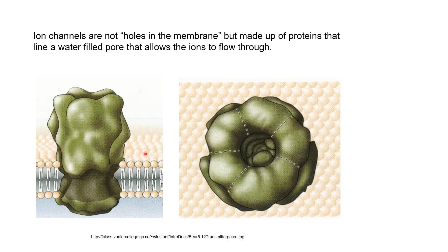These ion channels are not formed by creating holes in the bilipid layers of the membranes. Rather, ion channels are formed by protein molecules that are embedded in the membrane, spanning the whole bilipid layer — coming out on the outside of the neuron with one end on the inside. If we look at the molecule from the top, we can see a cavity or pore in between, which is typically filled with water, and the ion molecules can pass through this cavity.